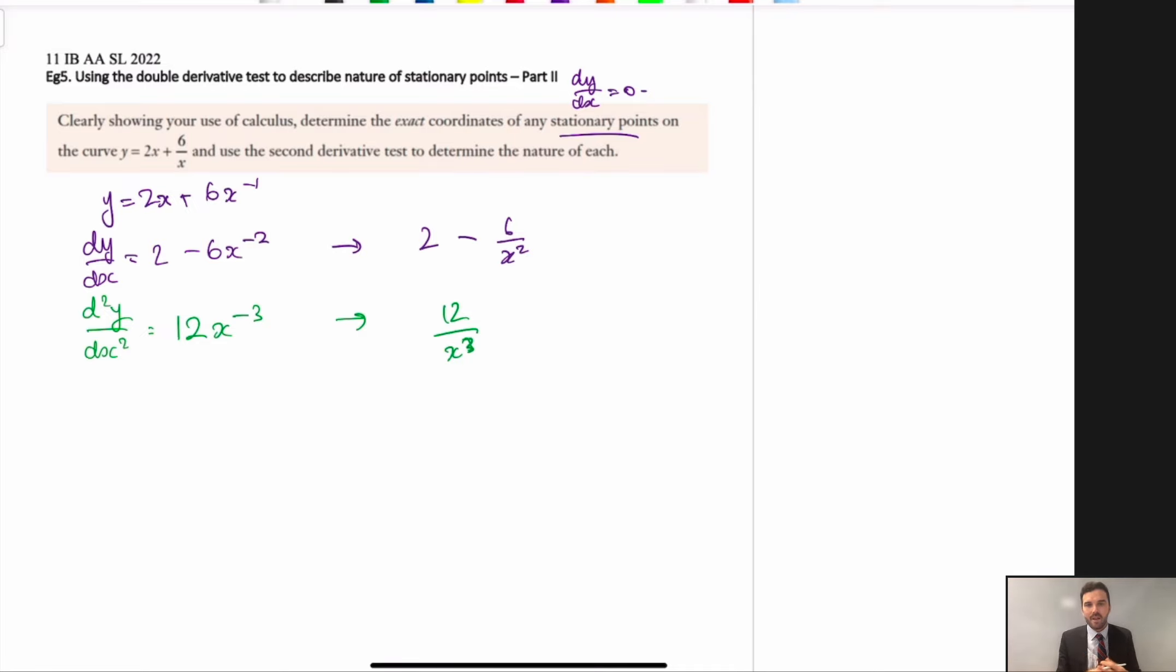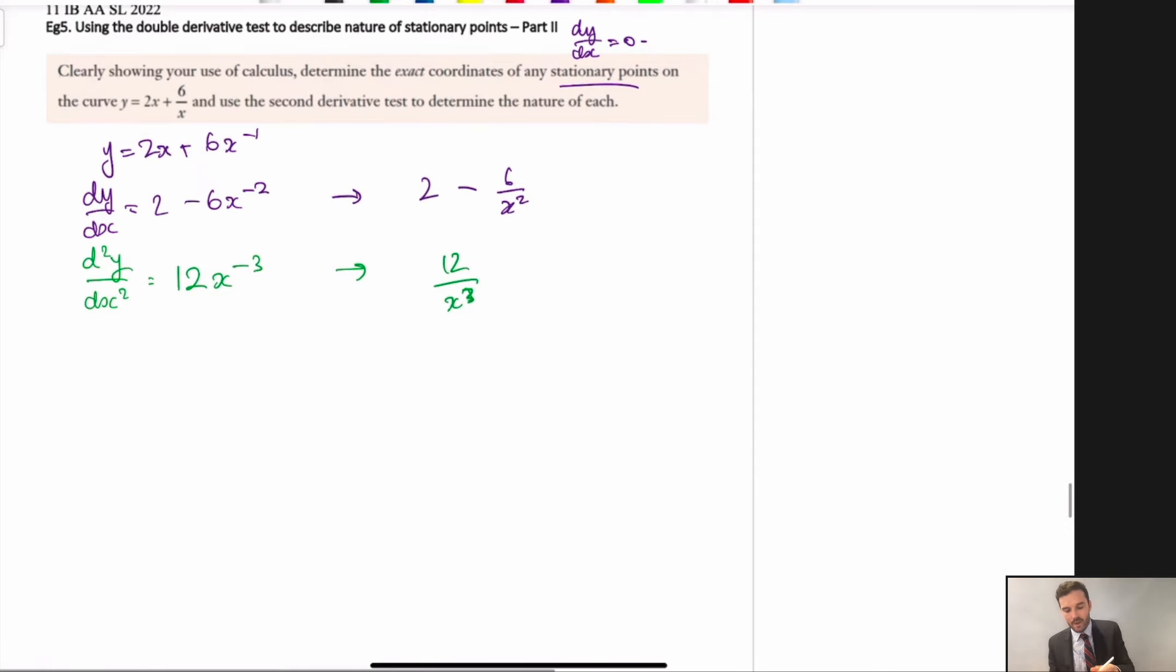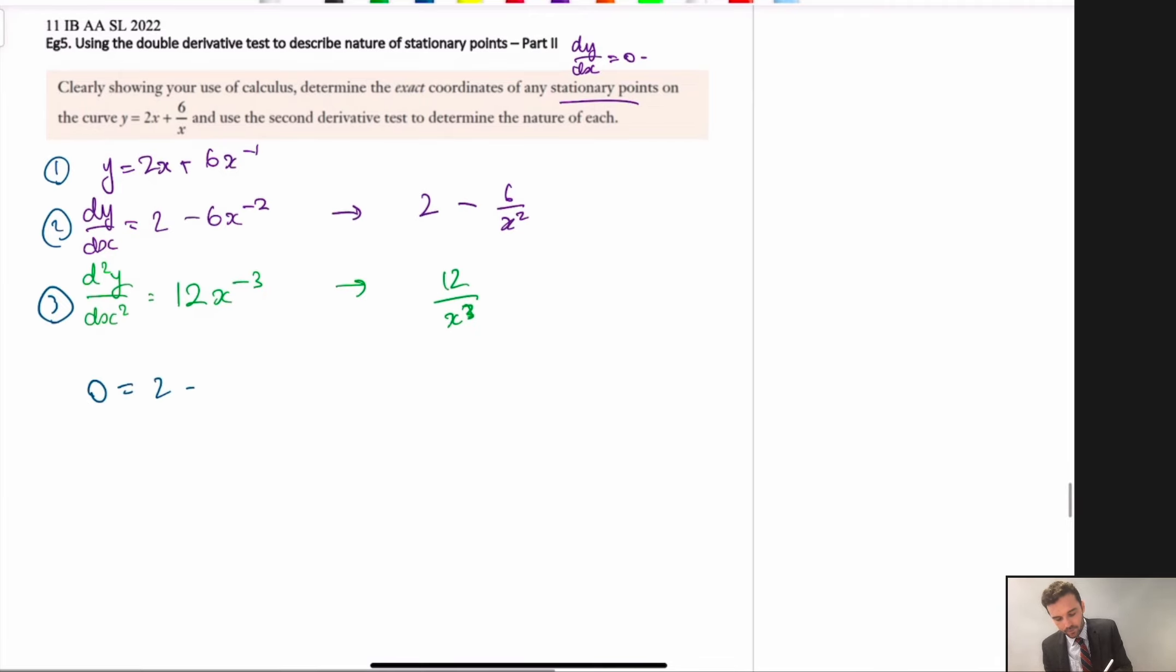So, we've done that there. Now, we need to find these stationary points. So, we need to use, and I'll call this equation 1, 2, and 3. We need to use equation 2 here and plug dy by dx as being 0 to find a stationary point. So, here we go. Now, a little trick. I think we remember this one.